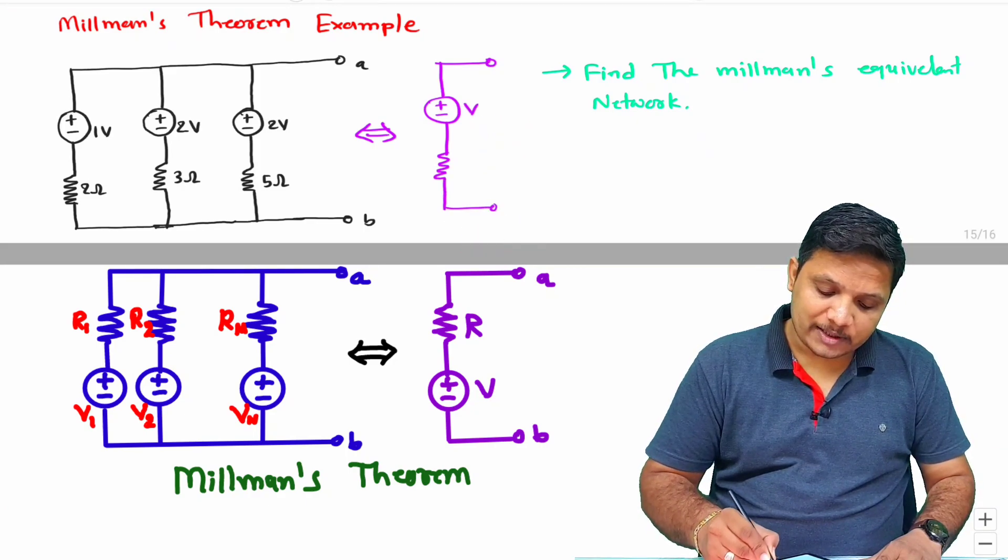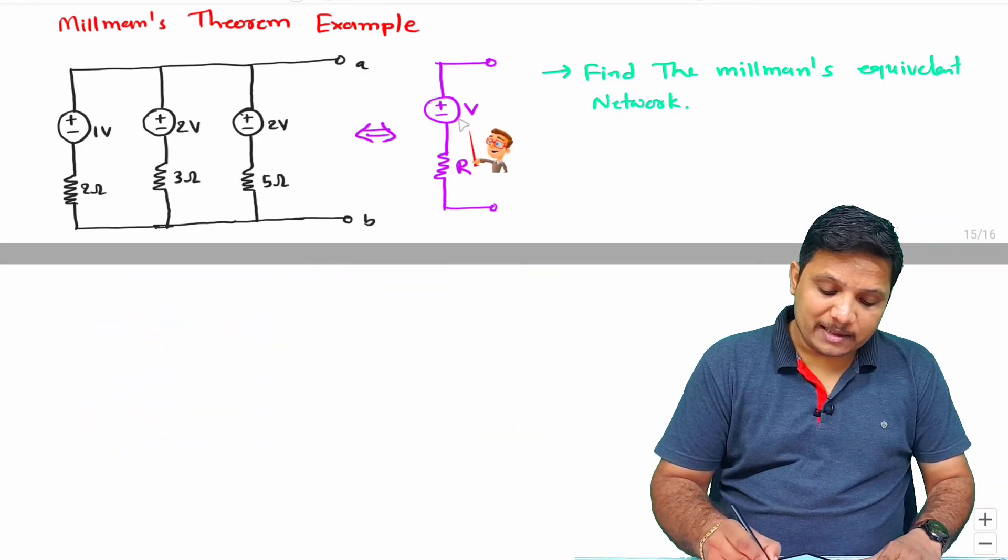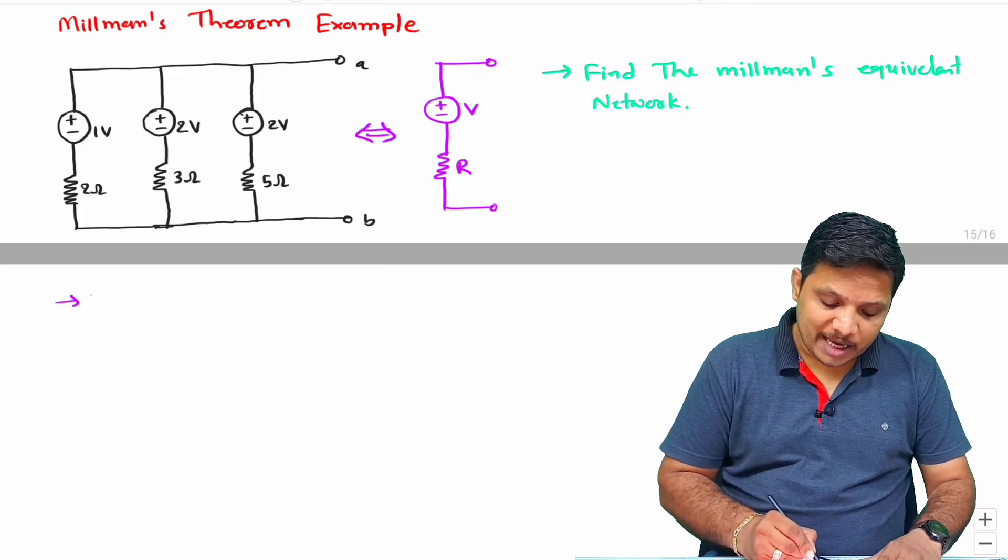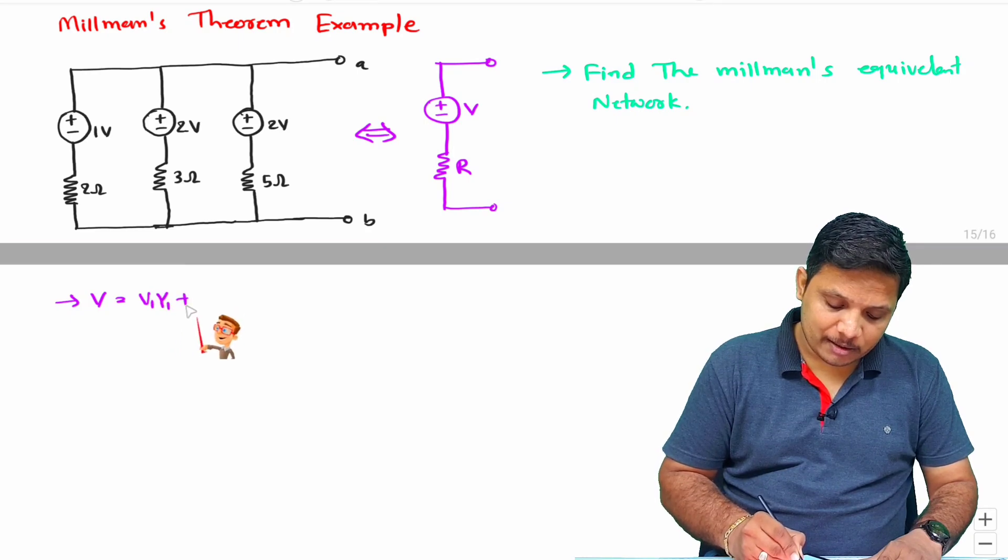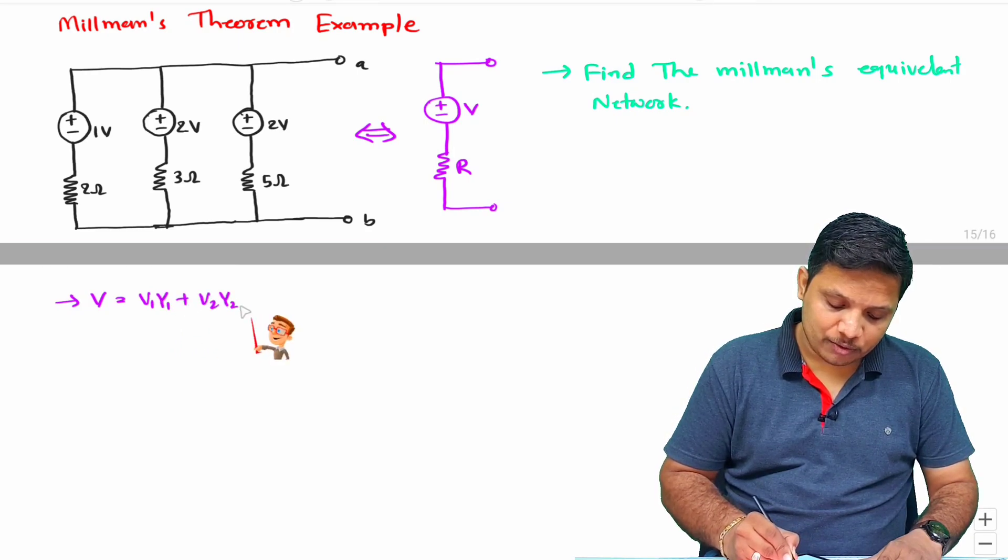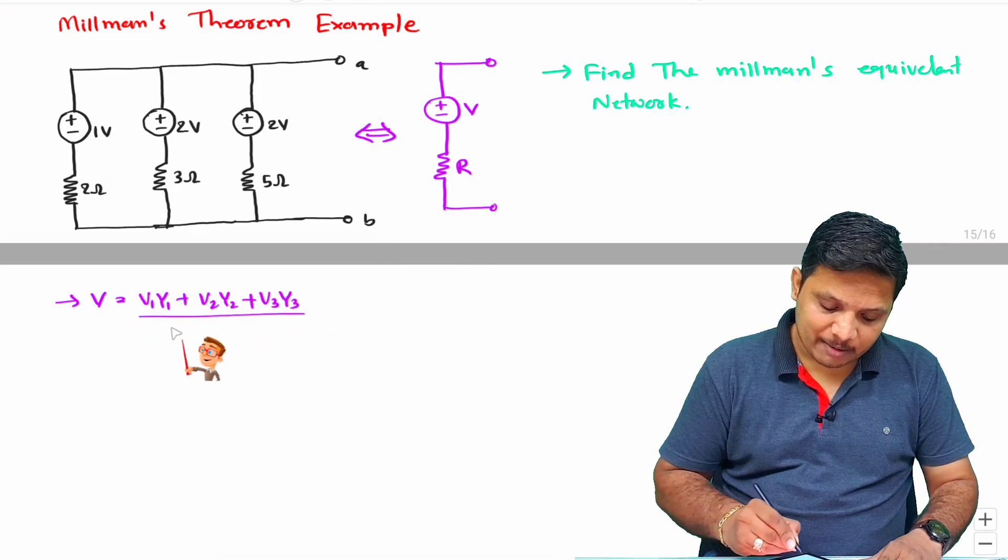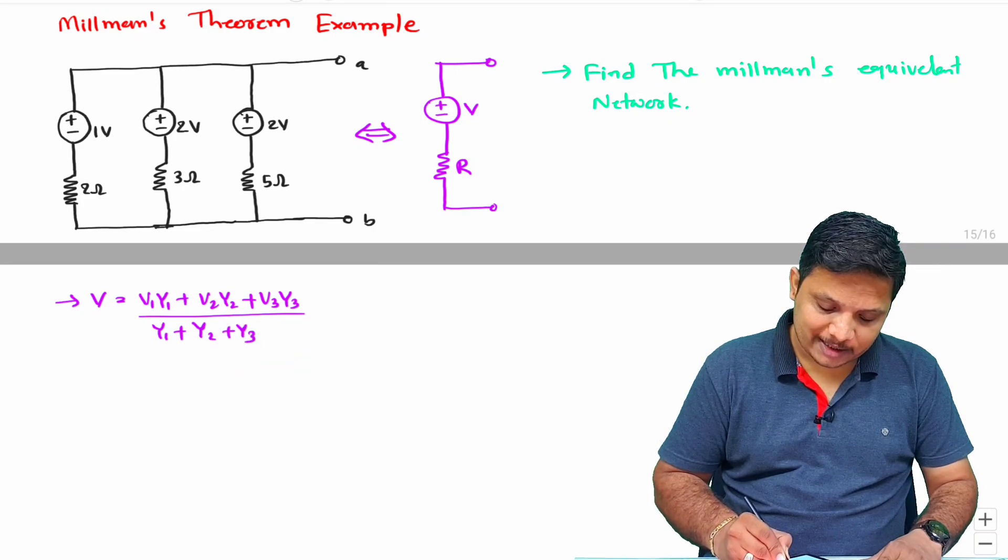Let us say this voltage source is V and this resistance is R. Then, Millman's theorem explains this voltage V equals V1Y1 plus V2Y2 plus V3Y3 divided by Y1 plus Y2 plus Y3.